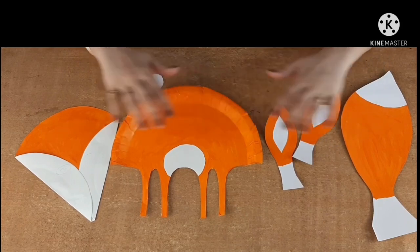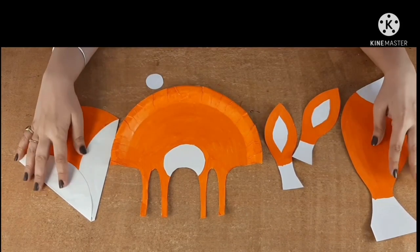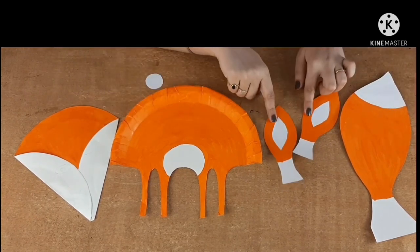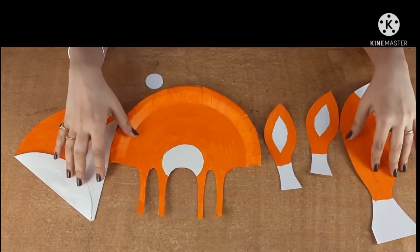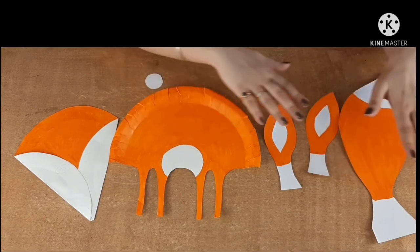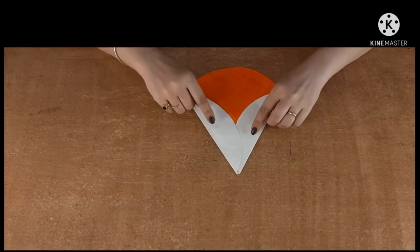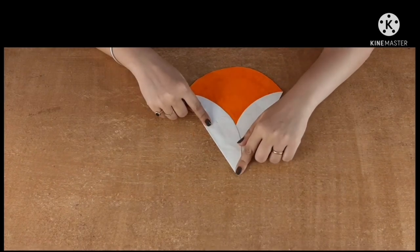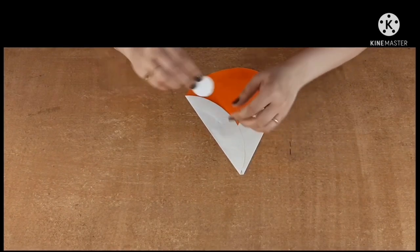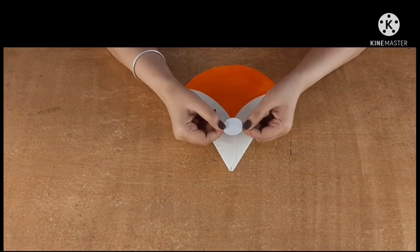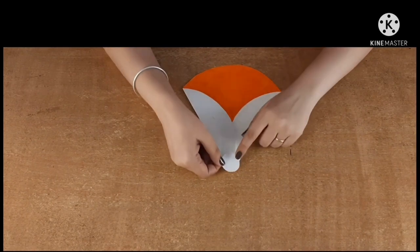Okay, so the paint has dried. And now we have these pieces of the fox. The head, the body, the two ears and the tail. Now we'll keep these things on the side. And here comes your face. Now we'll make a nose black. I'll cut a little round with chart paper and we'll stick it here.